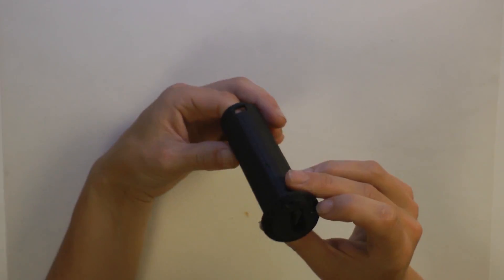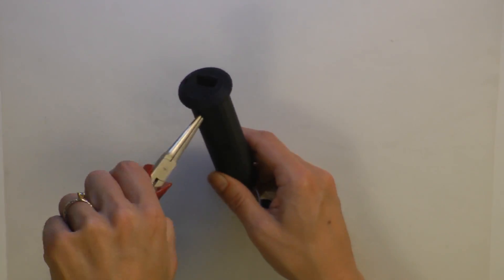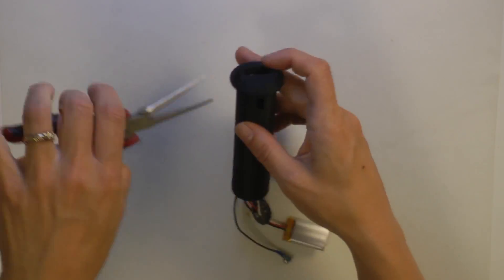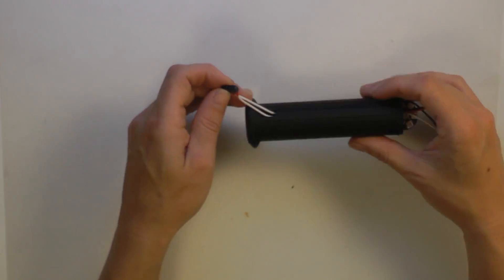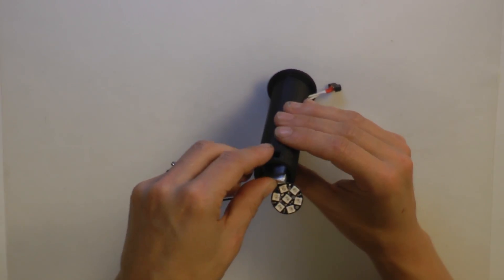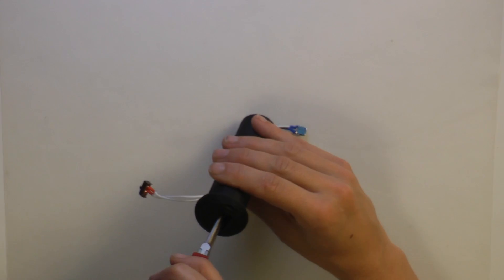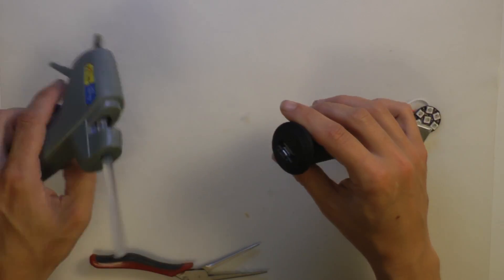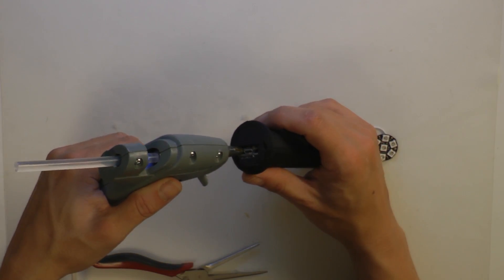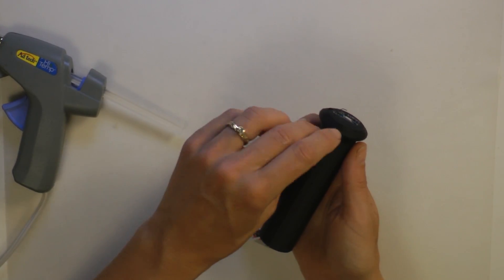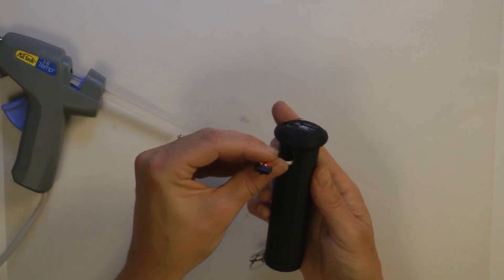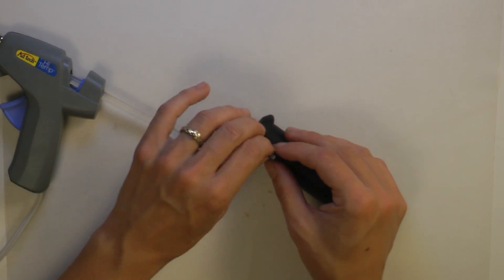First, place the on-off switch into the rectangular hole on the side of the handle. Then, settle the Pro Trinket into the bottom hole and secure it with hot glue, being careful not to get any glue in the USB port. Glue the on-off switch in place and settle the battery inside the handle.